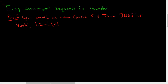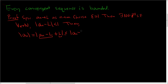What we'll do next is use this inequality to create an upper bound for a sub n when little n is bigger than capital N. The absolute value of a sub n — we need to involve L, so we'll subtract L and then add it back. Using the triangle inequality, this is smaller than 1 plus the absolute value of L.